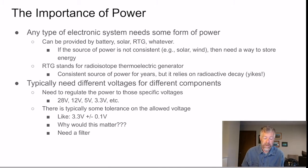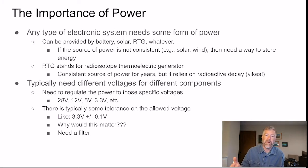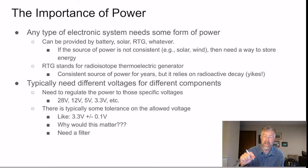You typically need different voltages for different components in a power system — something like a 28 volt rail, a 12 volt rail, a 5 volt rail, and a 3.3 volt rail. There is usually some tolerance on the allowed voltage. For example, if you need a 3.3 volt rail, you can't have 3.5 volts or 2.7 volts, as those are outside the limits. A specification sheet will typically say something like 3.3 plus or minus 0.1 volts, and your power system needs to build in that tolerance.